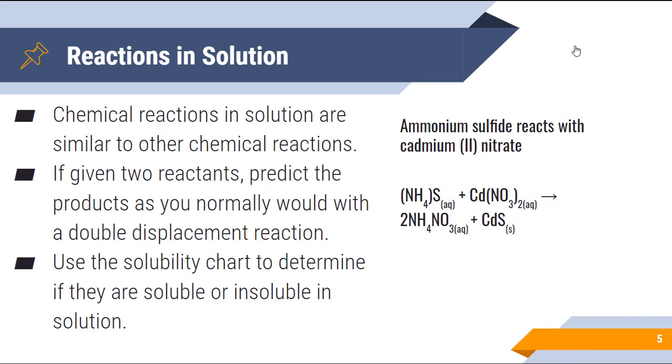The chemical reactions in solution are very similar to other chemical reactions. If you are given two reactants, you just simply predict the products as you normally would with a double displacement reaction, just like what I've done here on the right with ammonium sulfide and cadmium nitrate producing ammonium nitrate and cadmium sulfide. We then use the solubility chart to determine if they are soluble or insoluble in solution.